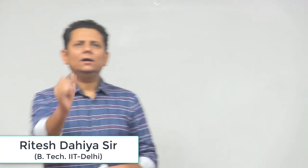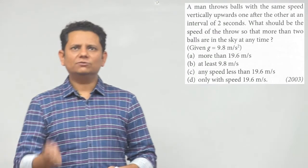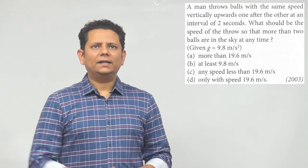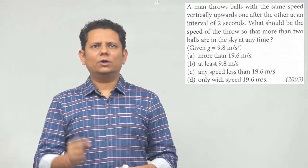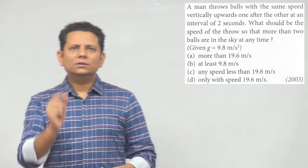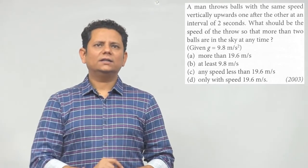Next, question 23 says: A man throws balls with the same speed vertically upwards one after the other at an interval of two seconds. What should be the speed of throw so that more than two balls are in the sky at any point in time?